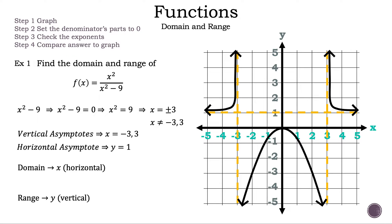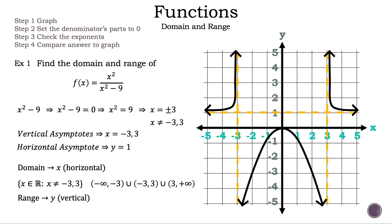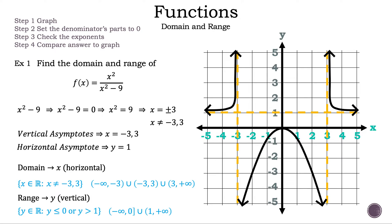Now let's write down the domain. We can write it as x is an element of all real numbers such that x cannot equal negative three or three. Or using interval notation, we have the unbounded interval of negative infinity to negative three, union the open interval of negative three to three, union the unbounded interval of three to positive infinity. That is the domain and range of our function. That is example one.